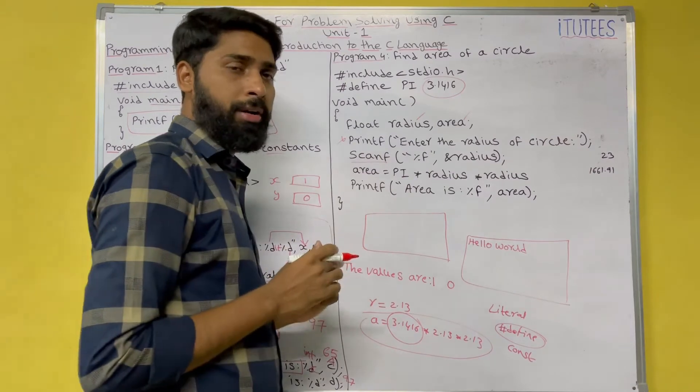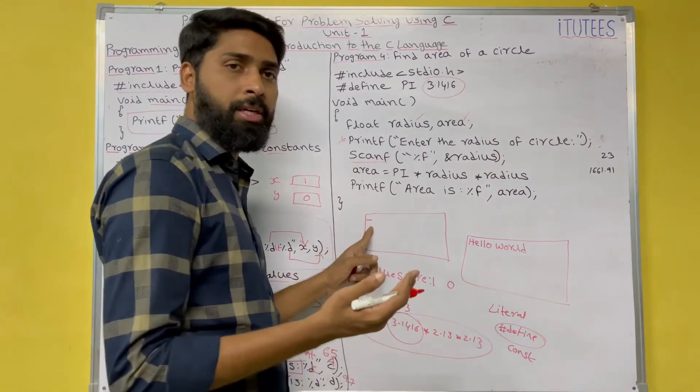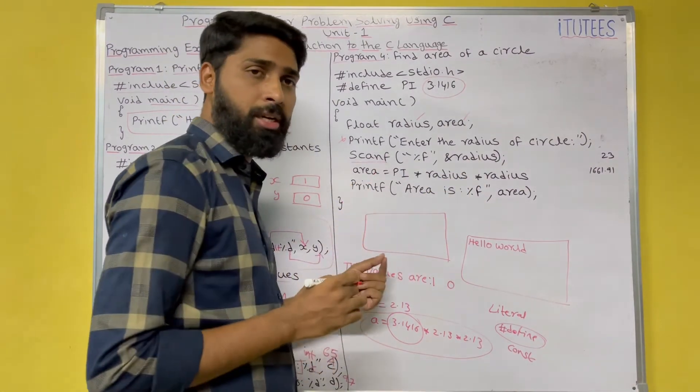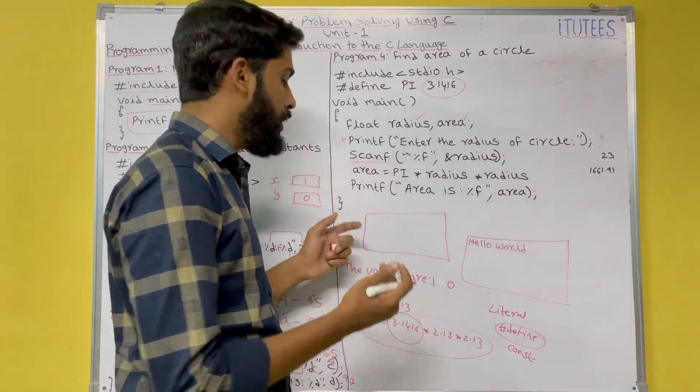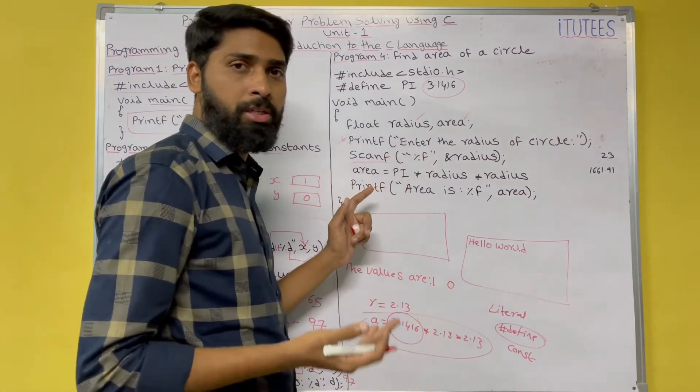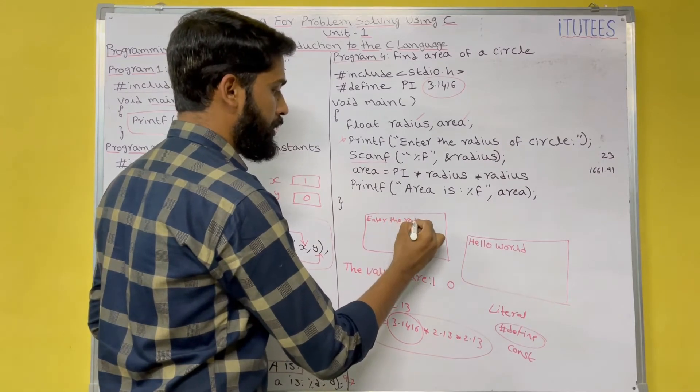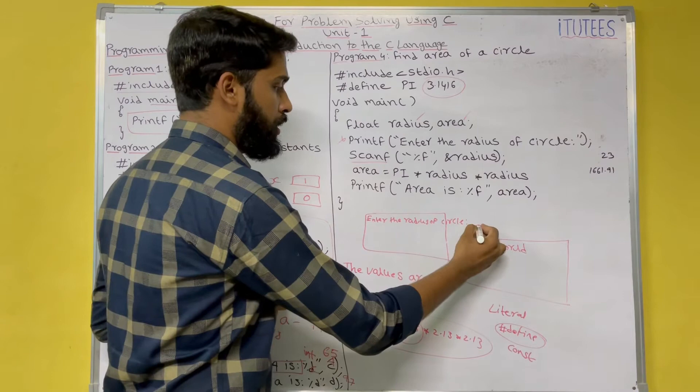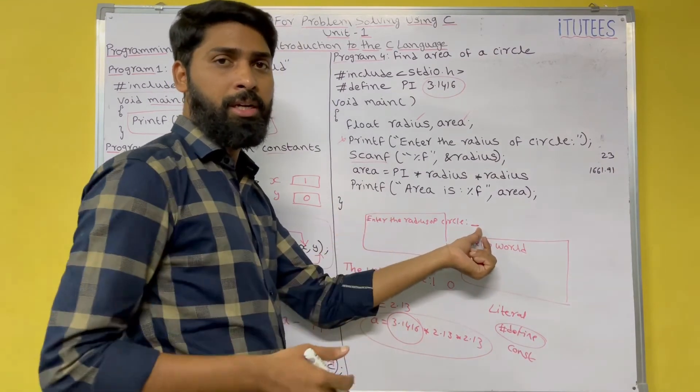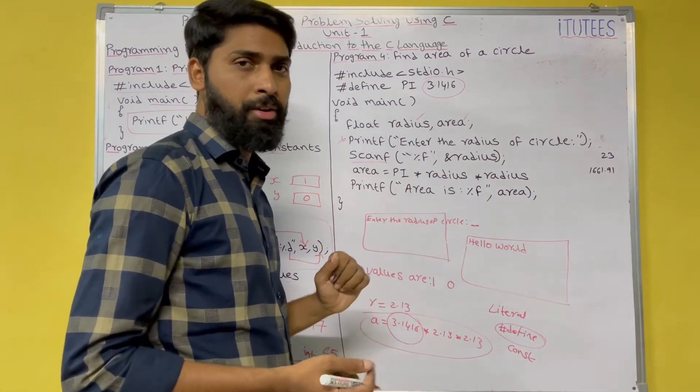If you are not writing this printf statement, then the cursor is waiting here. As a programmer, you know, this cursor is waiting to read the value of radius. But, everyone not understands that. So, why this cursor is here? To enter some data. Before reading the data, you are going to print some message regarding this data. Here, the scanf function is used to read the radius. So I print enter the radius of circle colon.